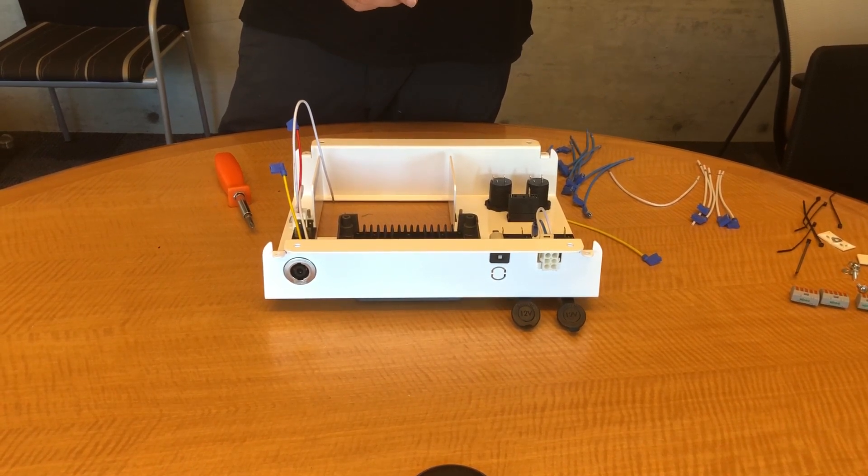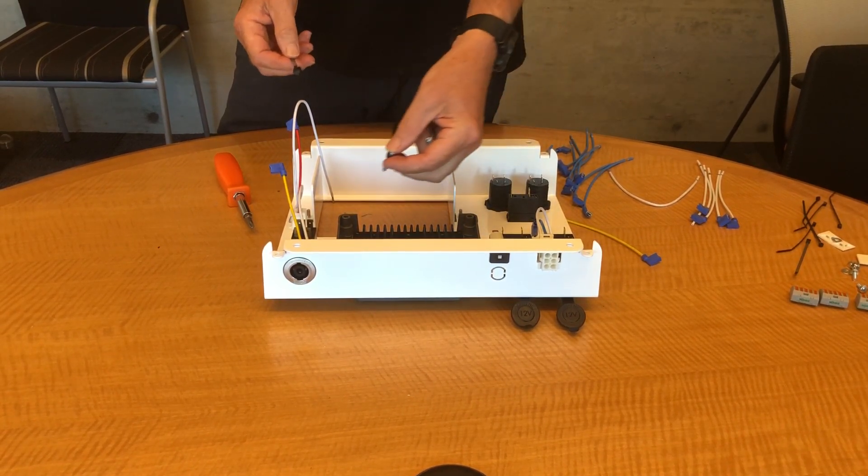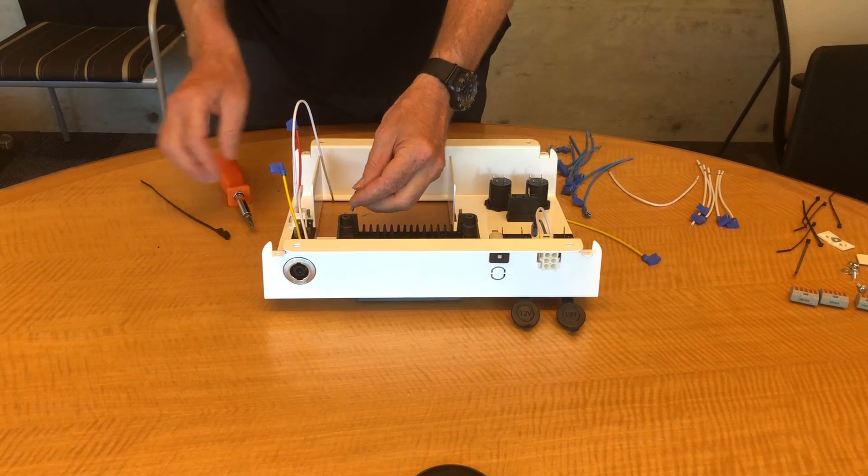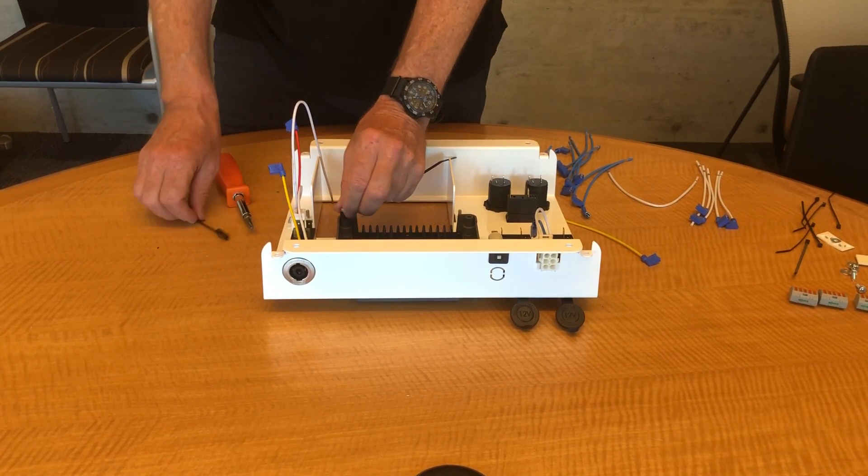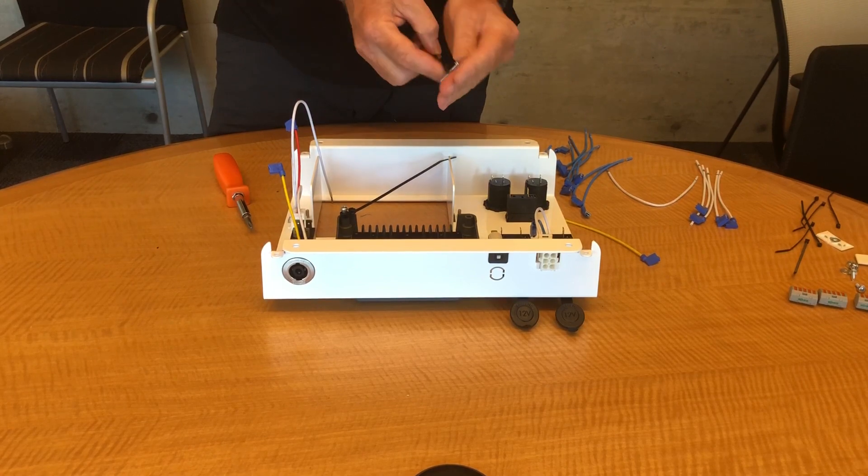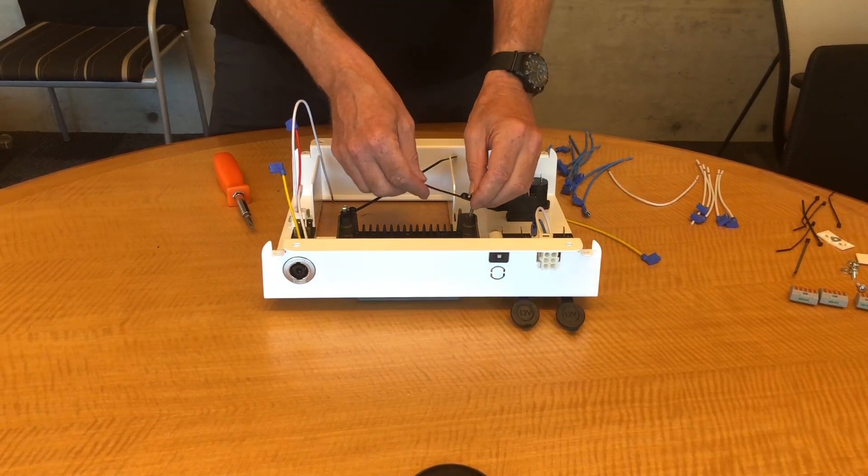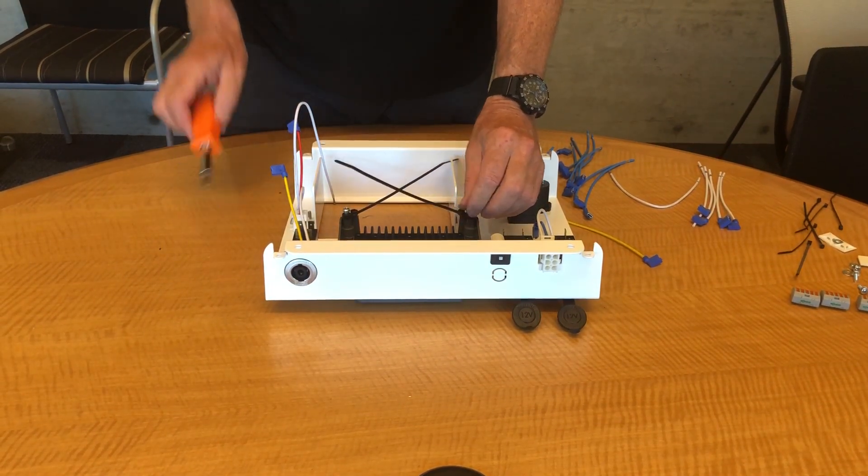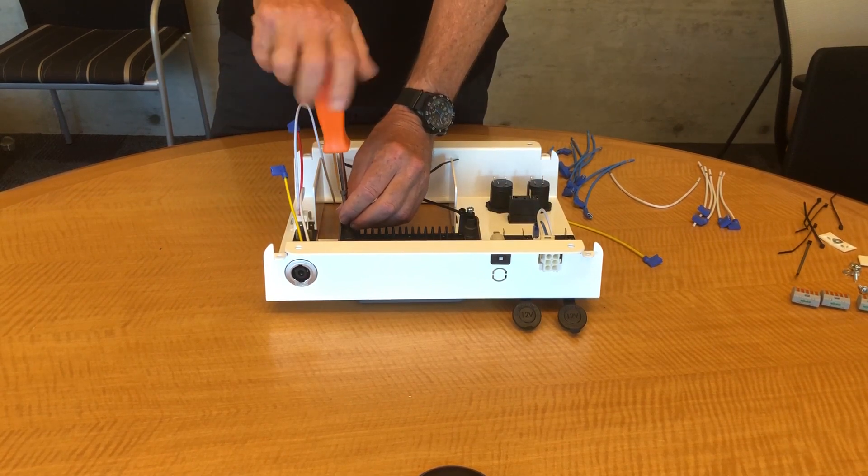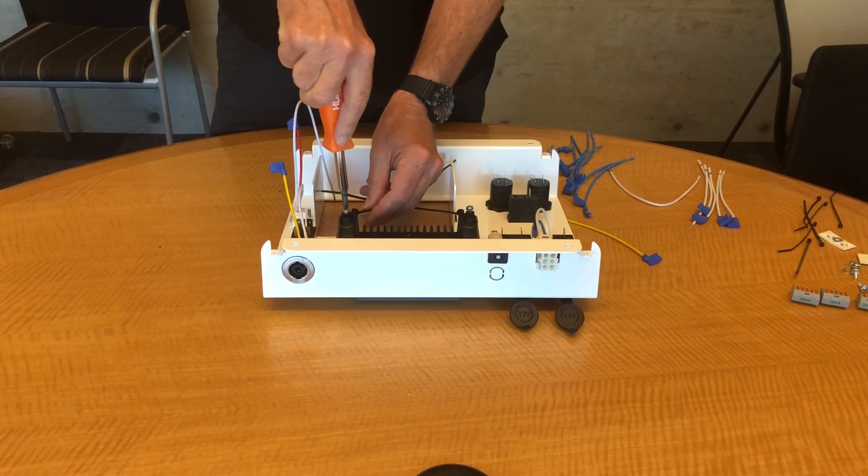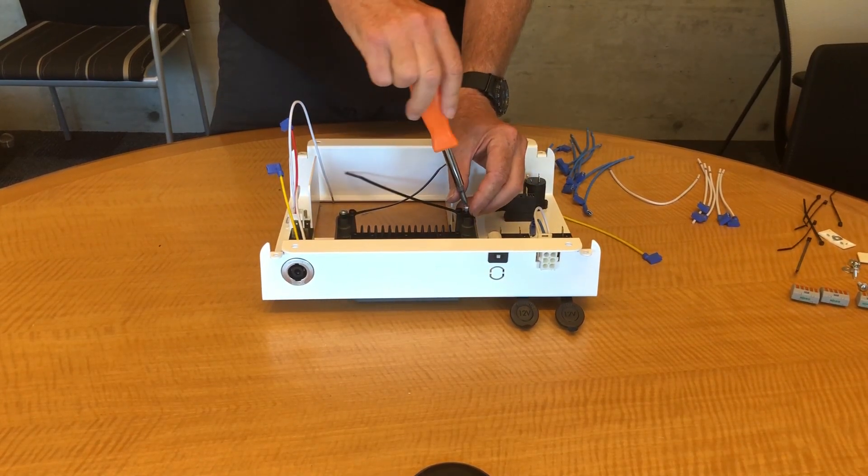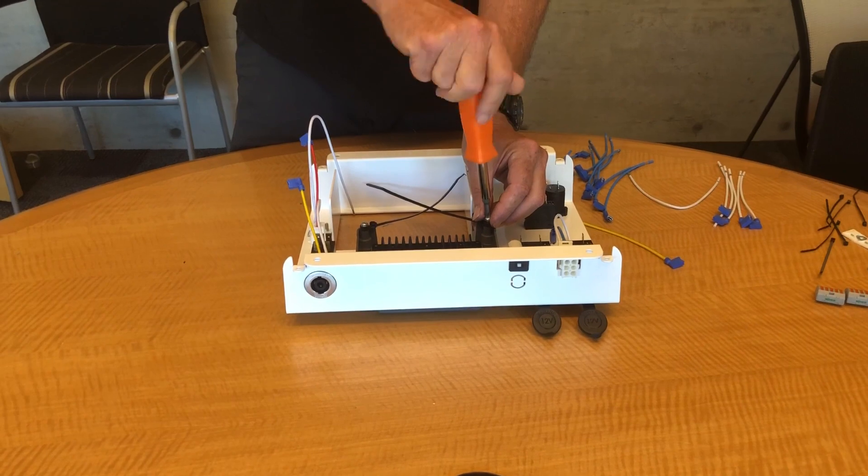So then we're going to put on the bottom two screws. But before we put them on, we're going to thread a zip tie on. And this is going to be used later for wire management. It'll make sense to you further on in the process. And then I'm going to get this pretty firm. You don't have to make this super tight, but you want it to be snug. And you can fully tighten it up later after the whole wiring is done.